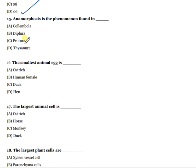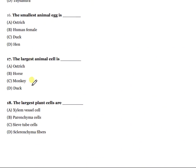Question 15: Anamorphosis is the phenomenon found in which group? The right answer is Protura. Question 16: The smallest animal egg belongs to which organism?